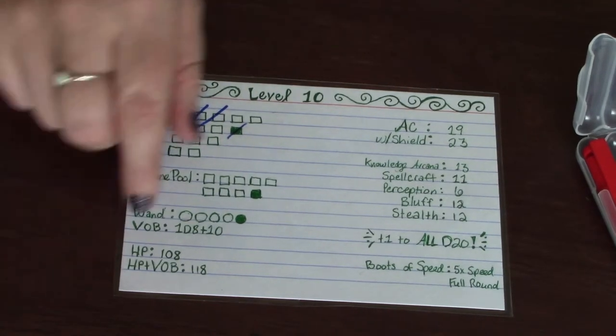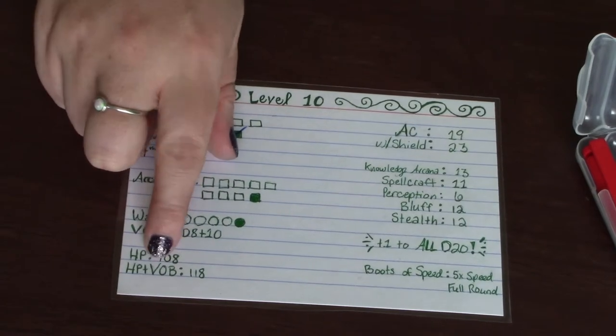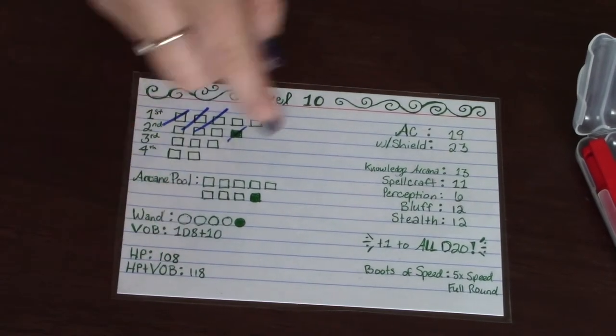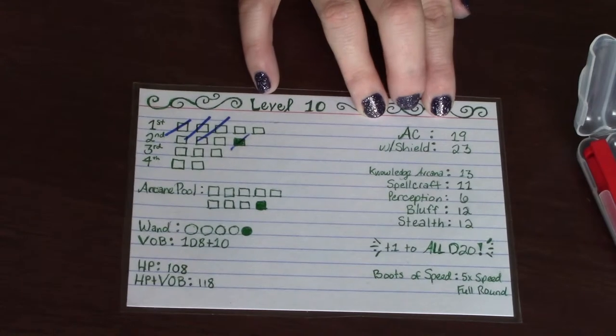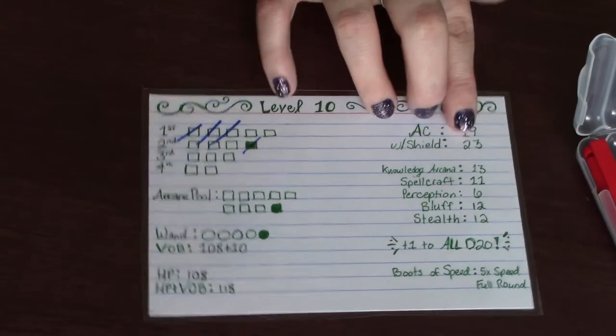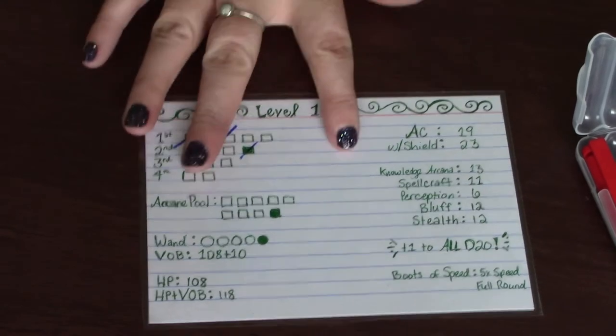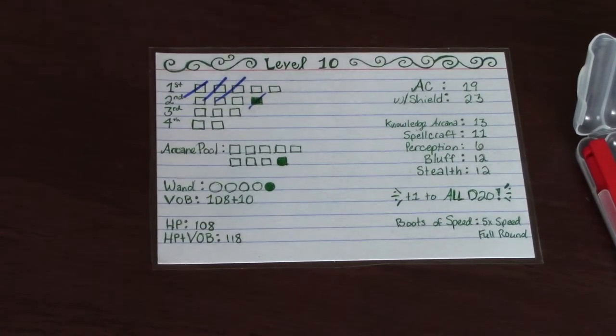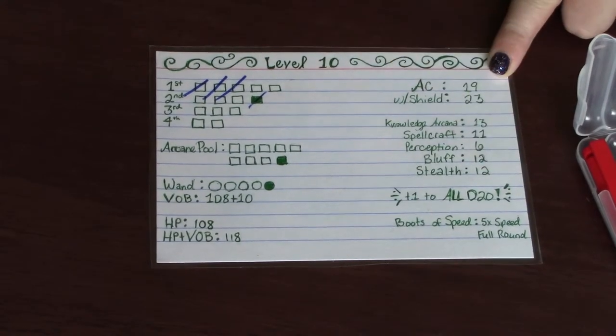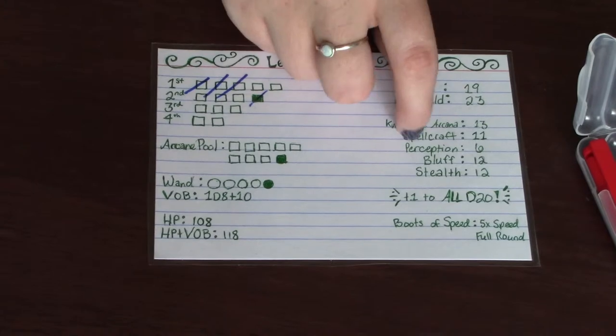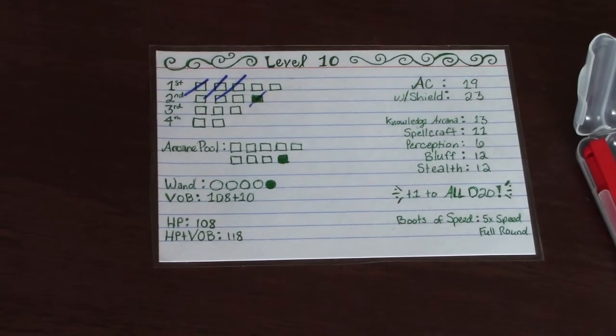But I have my HP and then HP with visualization of the body. My AC and then my AC with shield. So you can tailor it to however you need. The things that you look for the most on your character sheet is just good for a quick cheat sheet reference. And I also put some of my more used skill points.